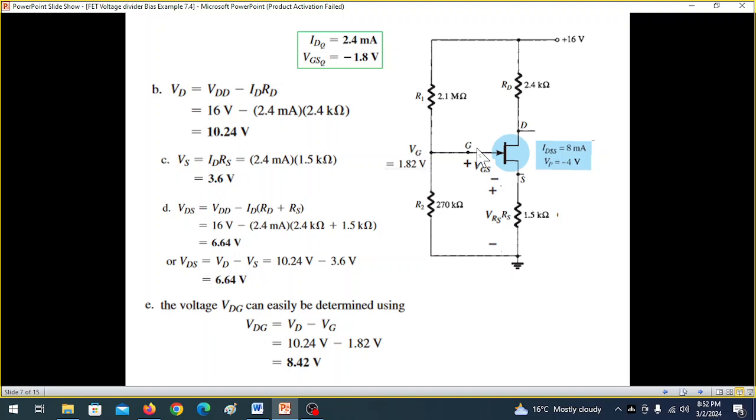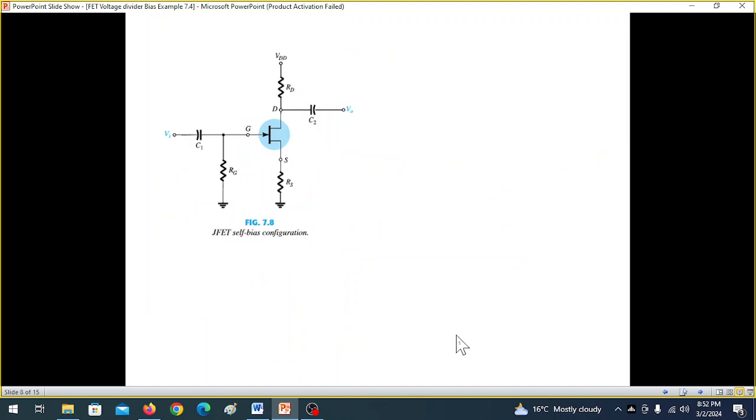So we can find it from VD minus VG. VD minus VG is our VDG. VD minus VG is 8.42V. Thank you.